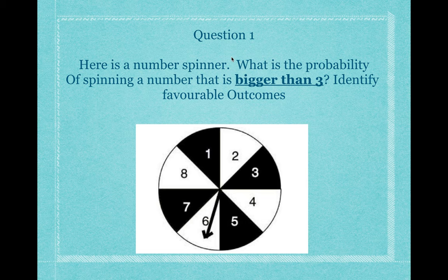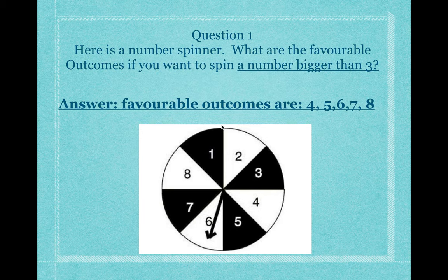Next question: here's a number spinner. What is the probability of spinning a number that is bigger than three? Identify the favorable outcomes. You need to get a number bigger than three. The favorable outcomes would be four, five, six, seven, and eight — all of these numbers are bigger than three. So we have five favorable outcomes out of eight. The probability would be five over eight.